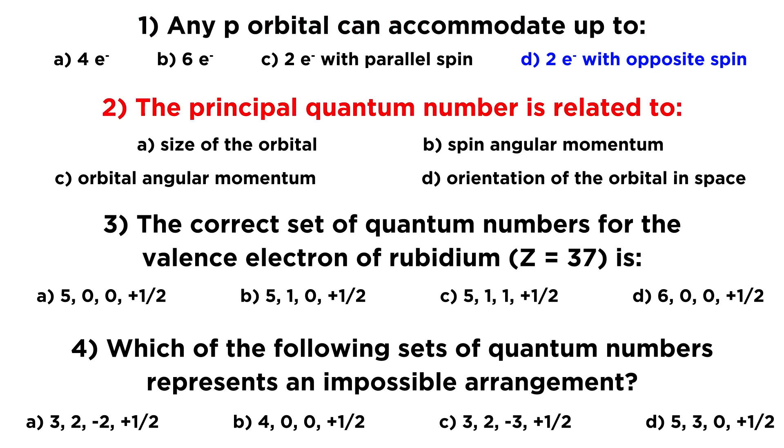The next question, the principal quantum number, remember that the principal quantum number is n, that's the very first one that we look at, and that is related to, that will be a, the size of the orbital. So if you think of, let's say, the s atomic orbitals, you have a 1s orbital, and then you have a 2s orbital, and a 3s orbital, and each time that spherical orbital is getting larger and larger, we're getting farther and farther away from the nucleus, and so that means the principal quantum number is related to the size of the orbital.